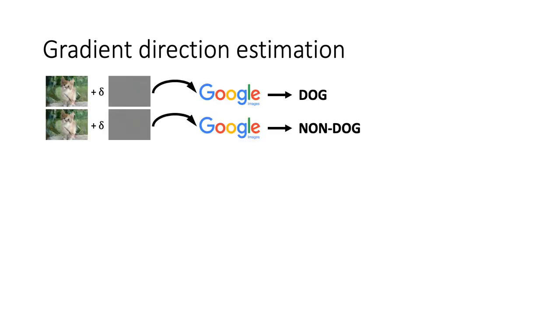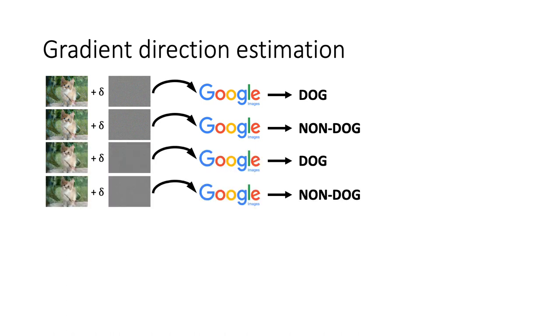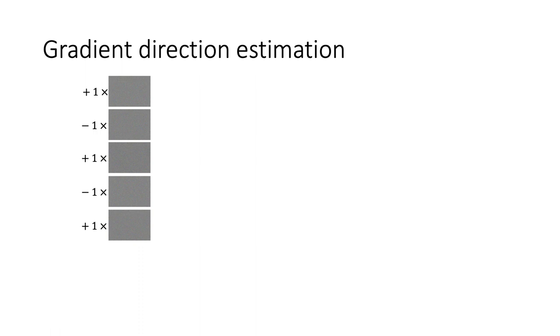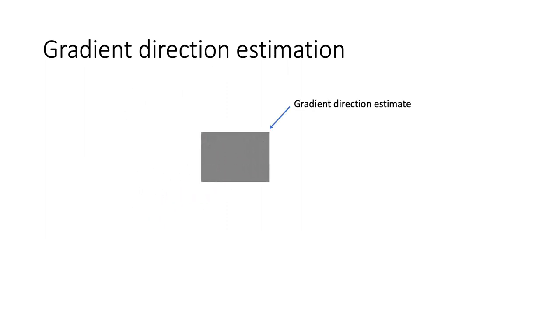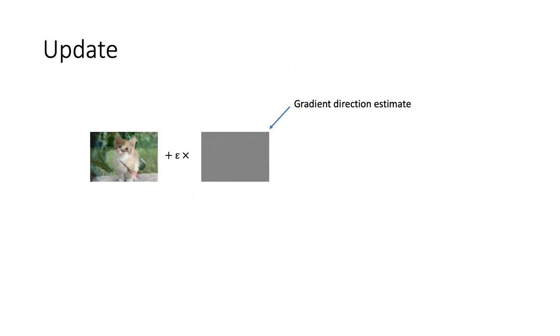In the step of gradient direction estimation, we add small random perturbations to the previous image and feed them to the model. Based on the label, we multiply the noise with positive or negative one and sum them together to get the gradient direction estimate. Finally, we add the gradient direction estimate to the image with the chosen step size.